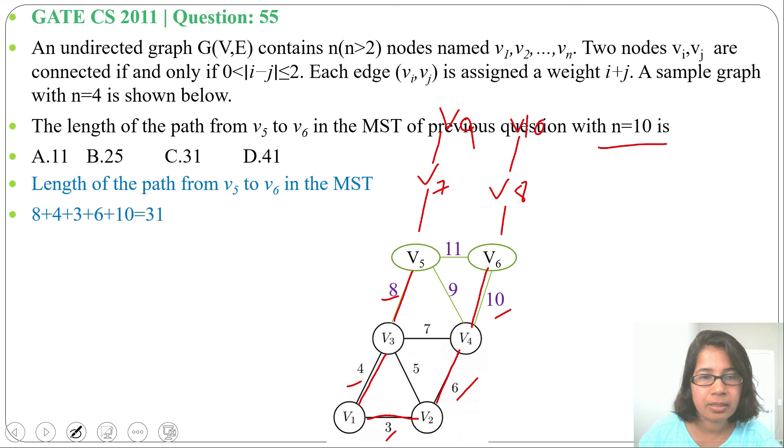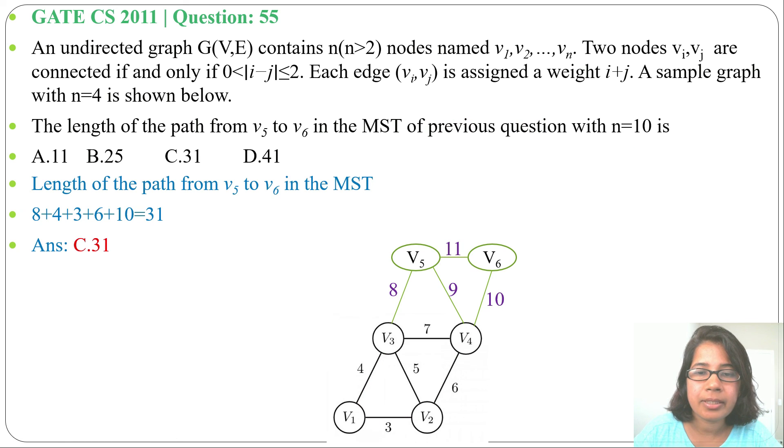So path cost from v5 to v6 is 31. It's present in option C, so answer will be option C. I already discussed how to find minimum spanning tree by using Prim's algorithm and Kruskal's algorithm. Just go through the lecture, you can easily solve this question. And if this video is helpful for you, please like and subscribe. Thank you.